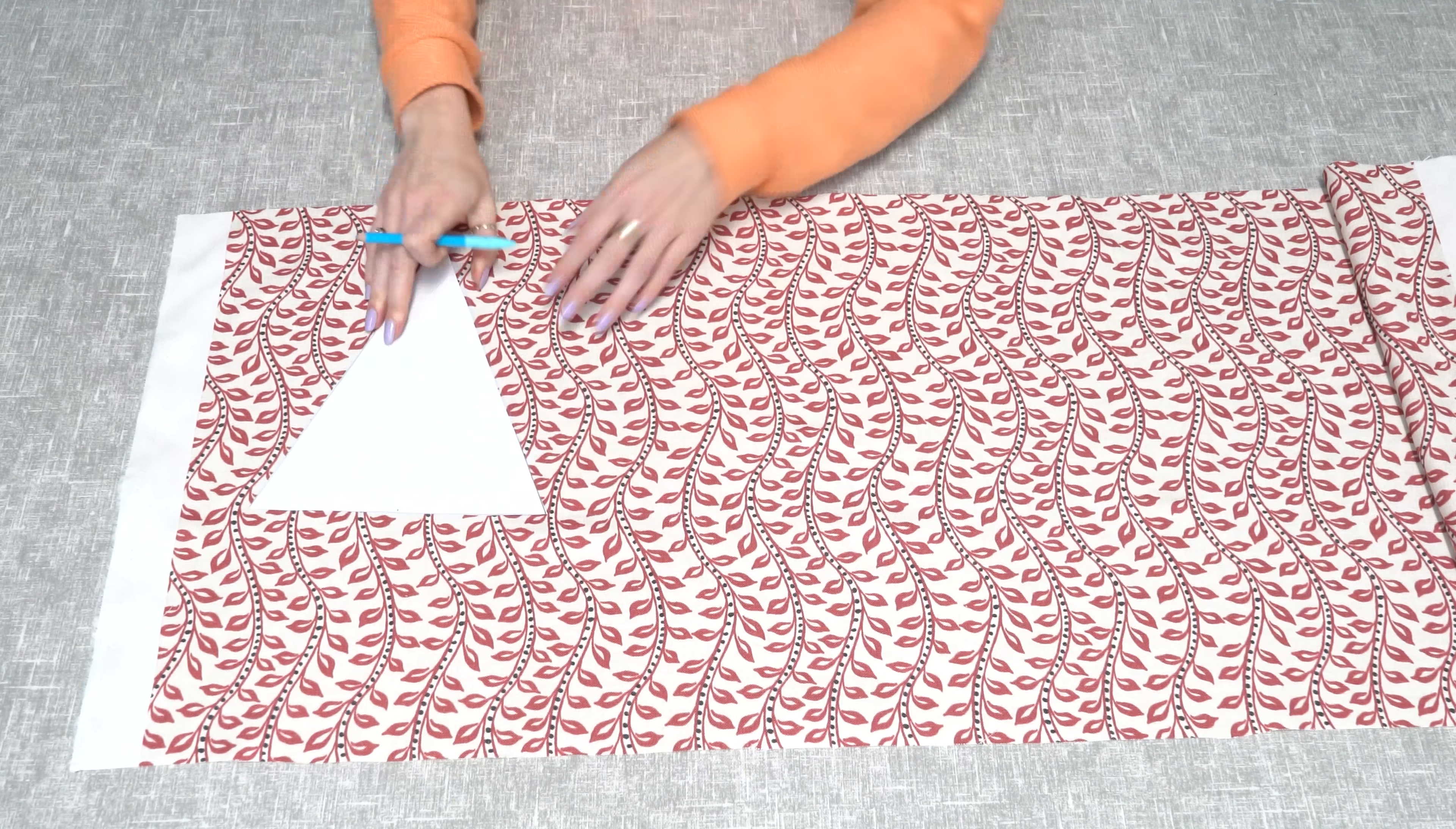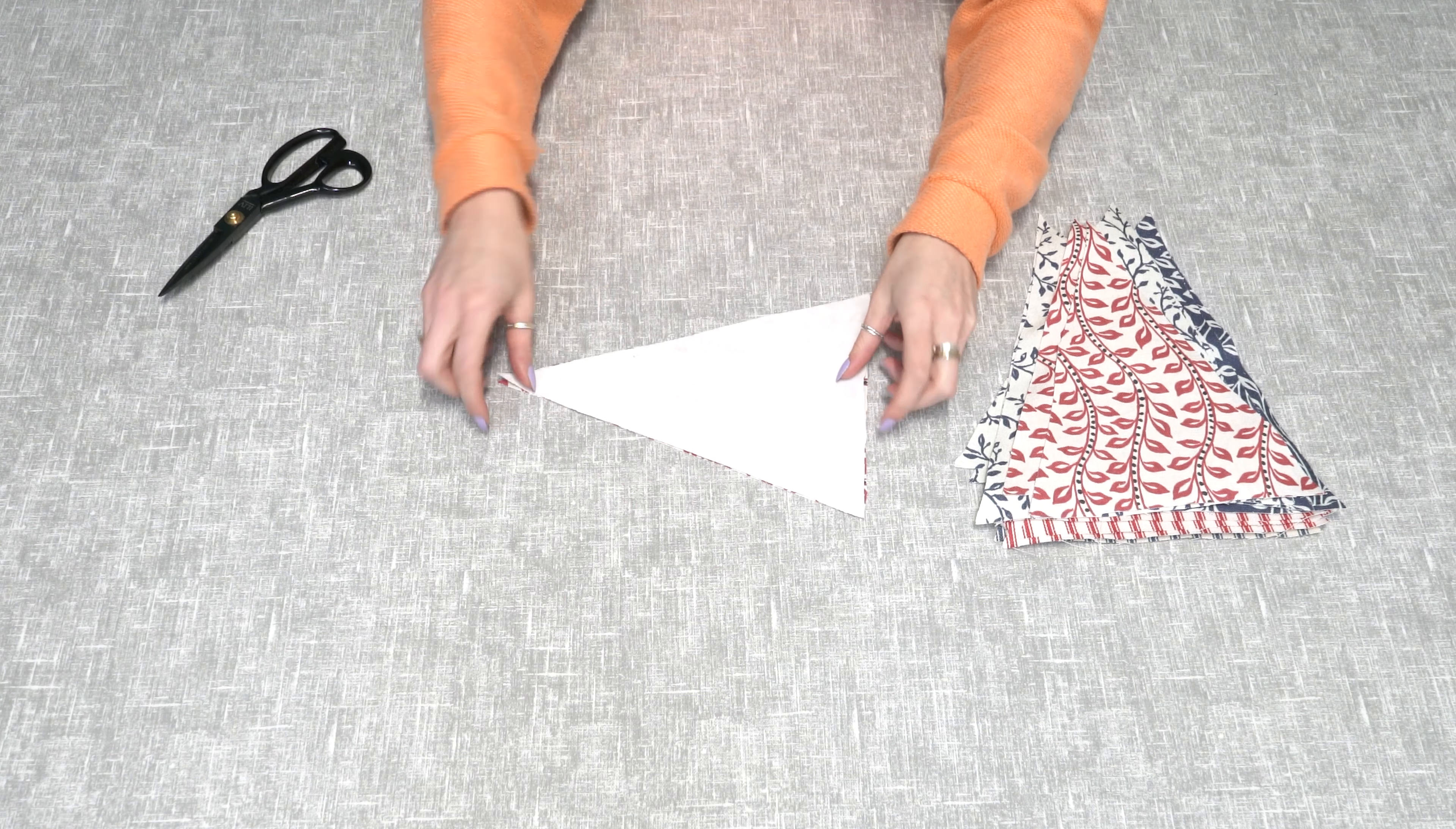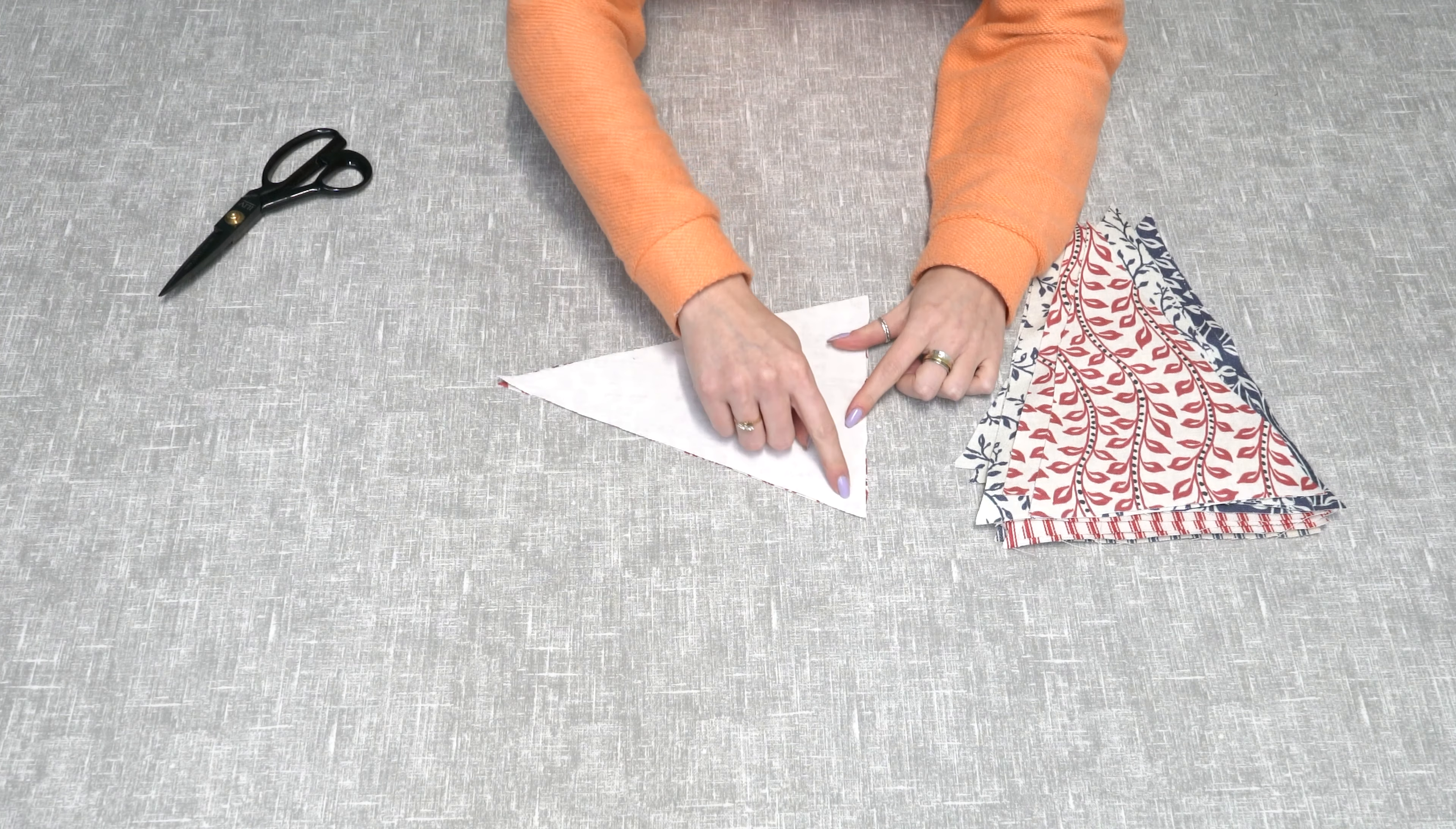So you want to put your bunting right sides together, line up your edges as best you can, and we're going to stitch all the way along here. We're just going to leave an opening just at the top there so we can turn them the right way out.